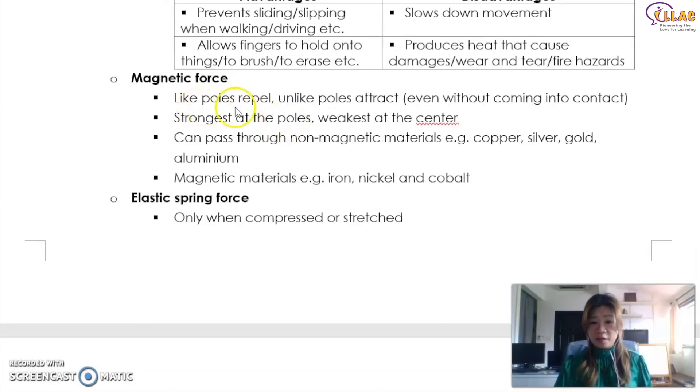Another force will be a magnetic force. You learn this in P3. So light pores repel, unlight pores attract. These are just reminders for you. It's strongest at the pore. Magnetic force is strongest at the end of the magnet and it's weakest at the center of the magnet. So it can pass through more non-magnetic materials. For example, copper, silver, gold, and aluminum. No effect to the magnetic force. And the magnetic materials will be iron, nickel, and cobalt. They will affect the magnetic force by capturing it.